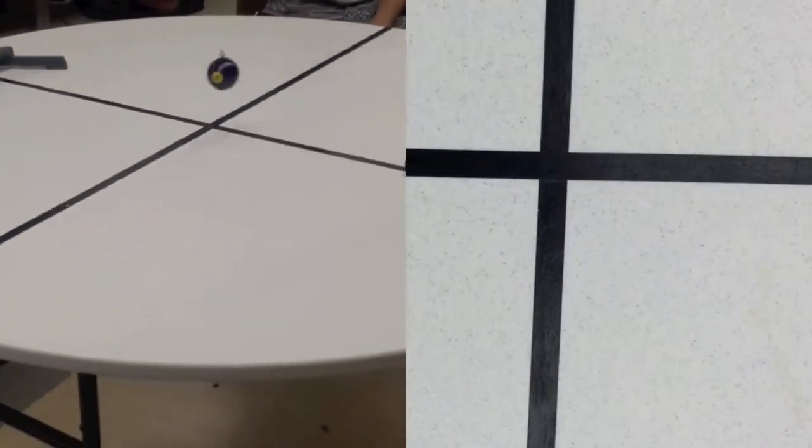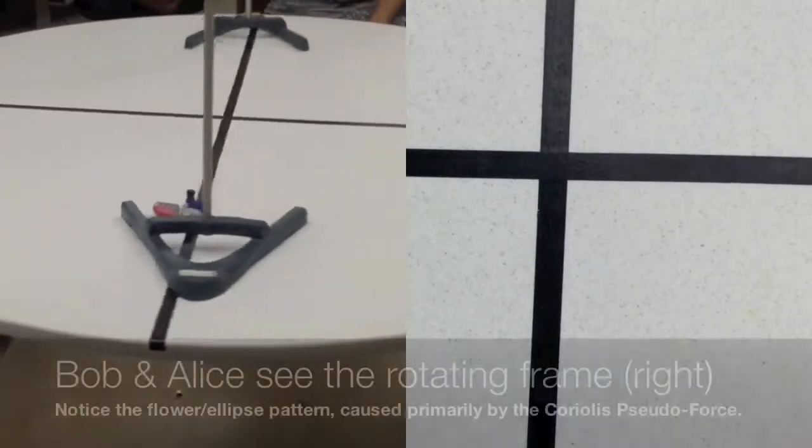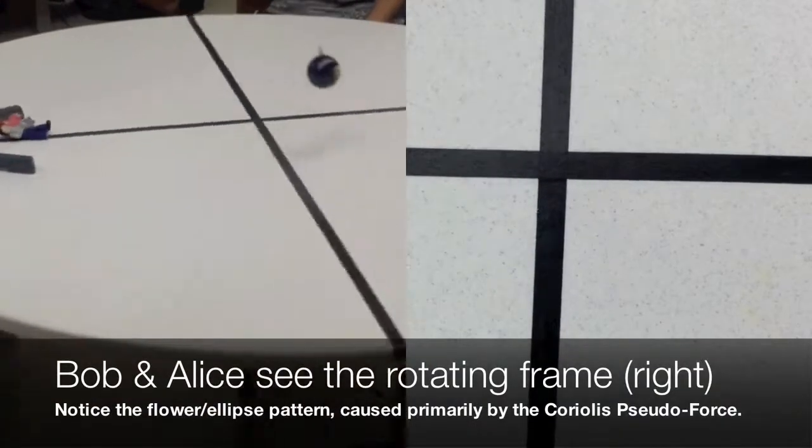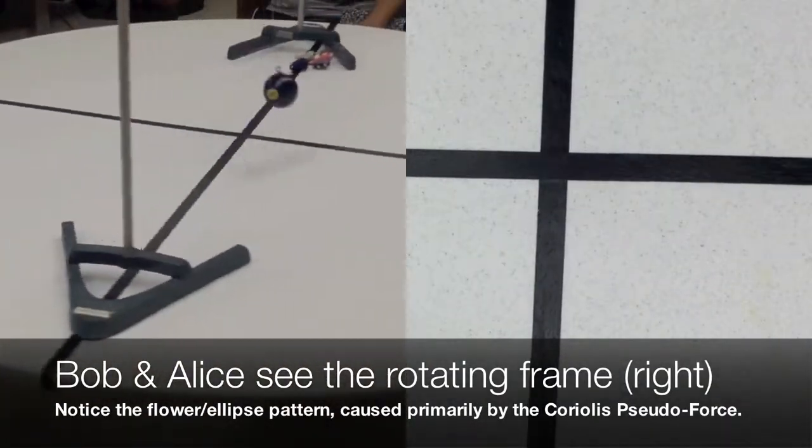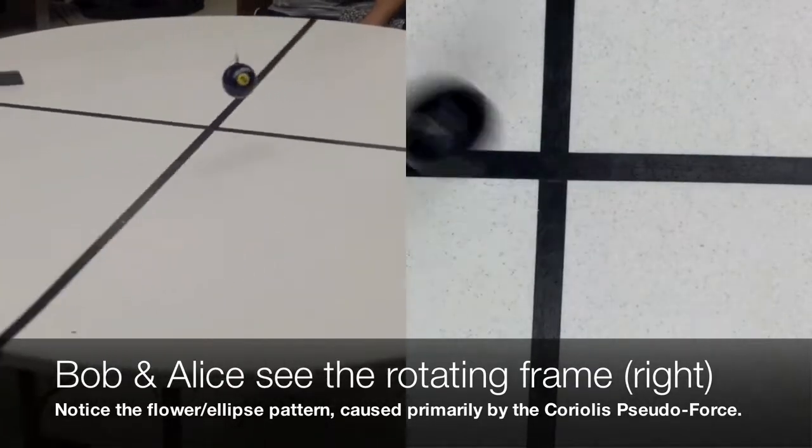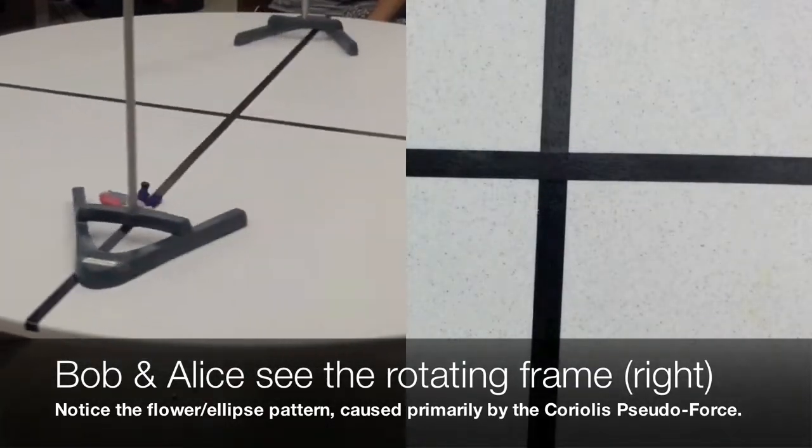So what happens now, from Bob and Alice's perspective, it's a little hard to imagine this, but it's actually moving in this oval direction. So it's not moving in a straight line anymore, it's actually moving in this long ellipse.